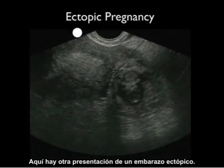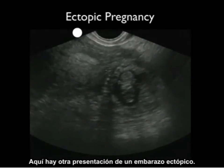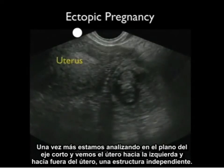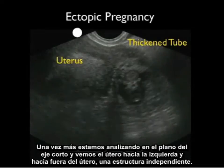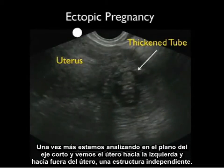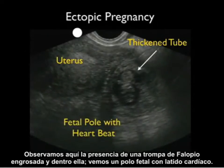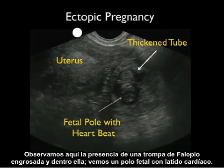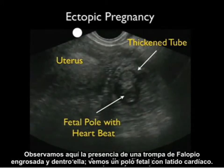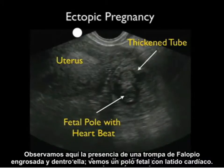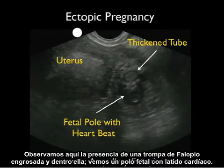Here's another presentation of an ectopic pregnancy. We're scanning in a short axis plane and we see the uterus to the left and, outside the uterus, a separate structure. We note here the presence of a thickened fallopian tube and inside the thickened fallopian tube we see a fetal pole with a heartbeat,